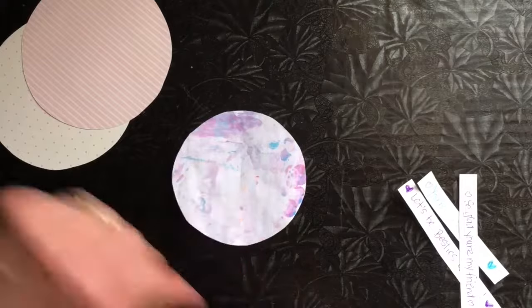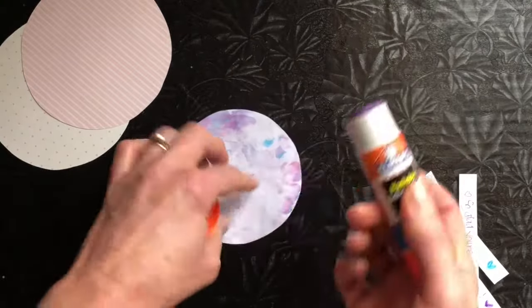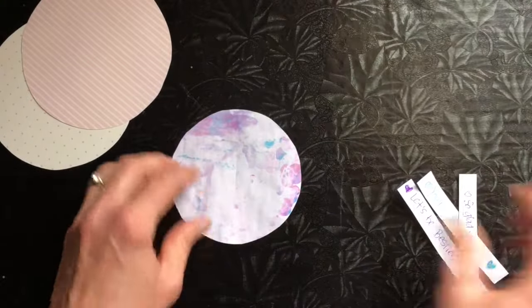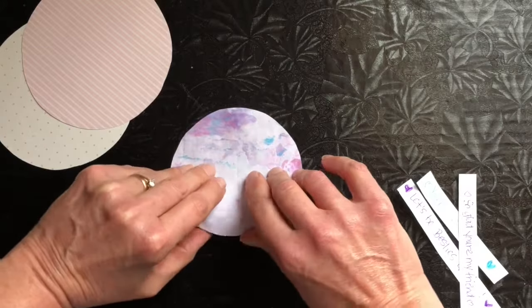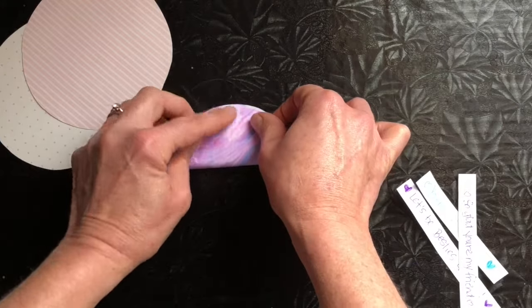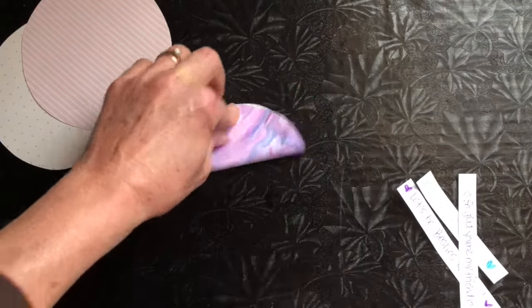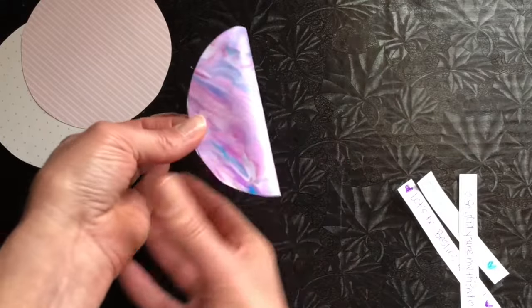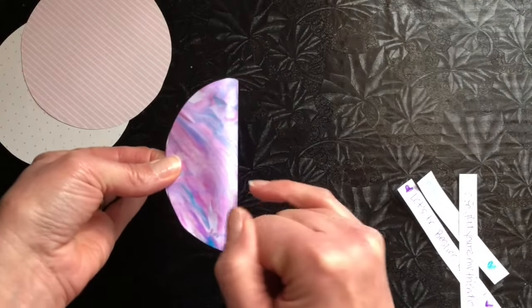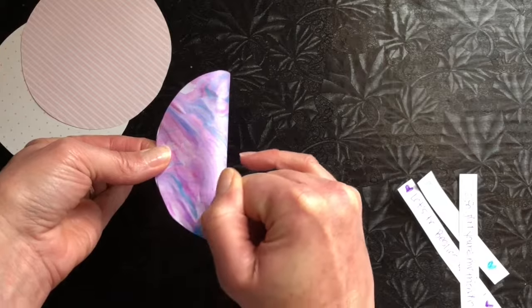So at the top of the fortune cookie you'll put a little bit of glue and you'll just fold the paper over and you'll hold your fortune cookie for a second. So that little crease we made is running this way.